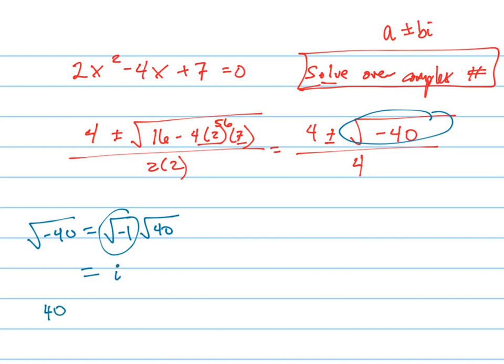40, break 40 up and you know that it's 4 and 10. 4 is a perfect square. You could have broken it up other ways, but you basically are looking for perfect square factors. So since 4 is a perfect square, that's really 2. I'm going to write that in front of the i. 2i root 10.